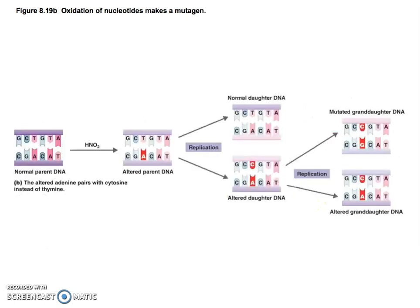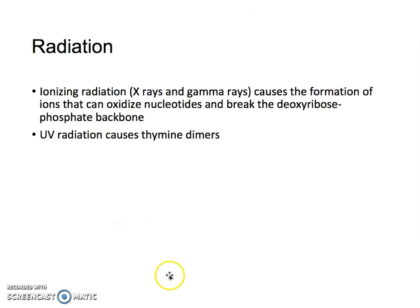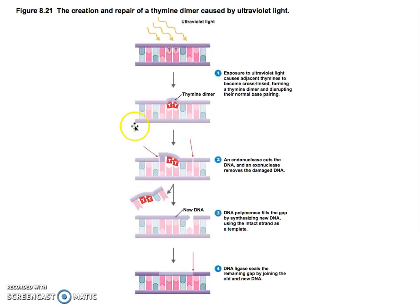Radiation: ionizing radiation causes the formation of ions that can oxidize nucleotides and break down the deoxyribose. UV radiation causes what we call thymine dimers. Photolysis is the separation of the thymine dimers. Then you have nucleotide excision and repair, where it cuts out the nucleotides and causes them to re-bind. Ultraviolet light from staying out in the sun too long causes thymine dimers, which are stuck to each other and cause mal-binding to the complementary nucleotide — it's cut out and then fixed.